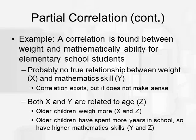So let's say that there is a correlation found between weight and mathematical ability for elementary school students. Realistically, there's probably not a real relationship between weight and mathematics skill. Otherwise, we would just start feeding our kids McDonald's and hoping that their math skills increase. Of course, that's probably a false correlation because both X and Y, both weight and mathematical skill are related to Z, age. Older children tend to weigh more and older children have spent more years in school. So they have higher mathematical skills. So really, age is probably driving this relationship.